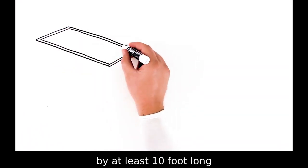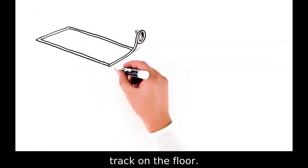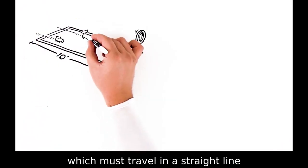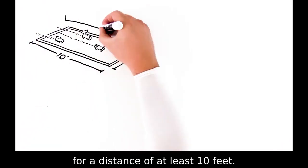To test their designs, use masking tape to create a 3 foot wide by at least 10 foot long track on the floor. Allow the teams to launch the cars, which must travel in a straight line for a distance of at least 10 feet.